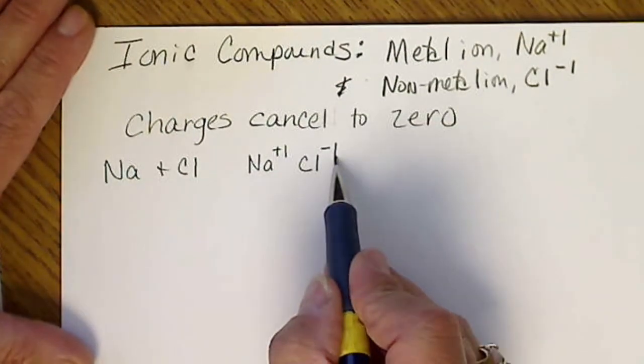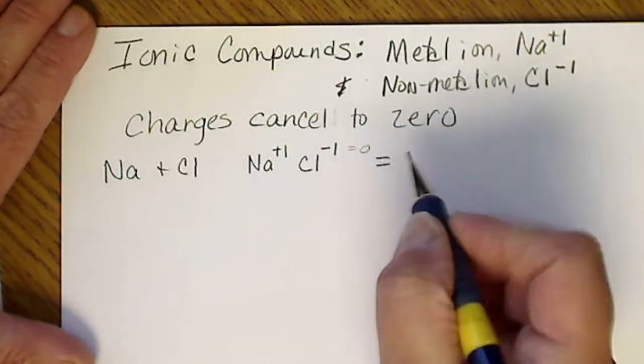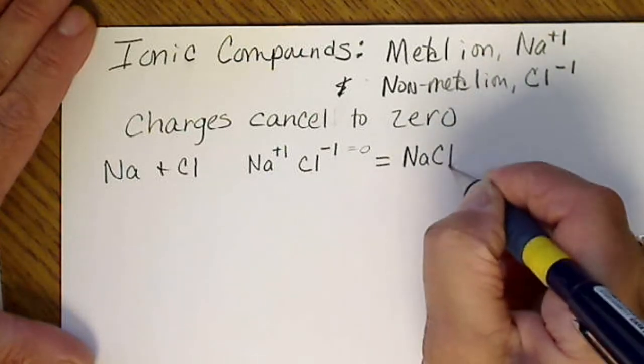A plus 1 and a minus 1 cancels to zero. So the formula for this is one of these with one of these: NaCl, and the name of this is sodium chloride.